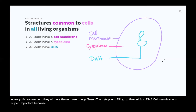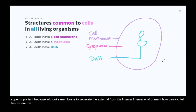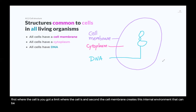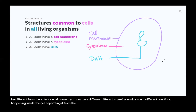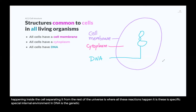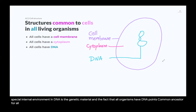The cell membrane is super important because without a membrane to separate the external from the internal environment, you can't tell where the cell is, and you can't maintain an internal chemical environment different from the exterior. The cytoplasm is where all reactions happen — it is that special internal environment. And DNA is the genetic material; the fact that all organisms have DNA points to a common ancestor that also had DNA, and this trait was passed on to all living organisms that still exist today.